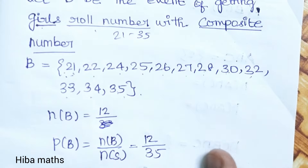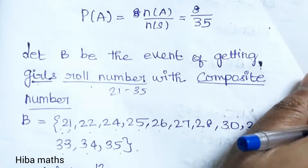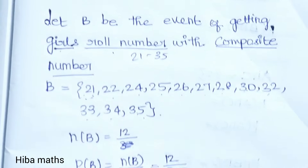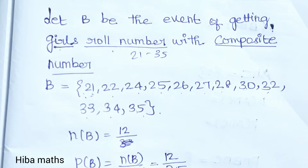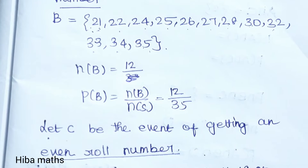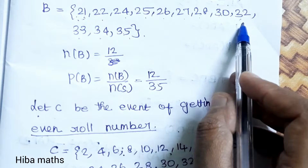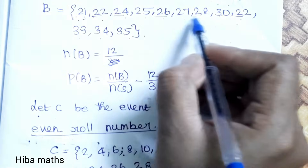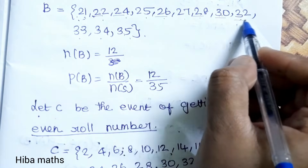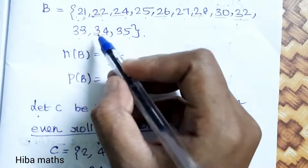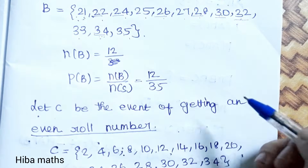Now let's find the intersections. A is prime numbers (boys 1–20), B is composite numbers (girls 21–35). Since A and B have no common elements, A∩B = 0. For B∩C: composite numbers from girls (21–35) that are also even: 22, 24, 26, 28, 30, 32, 34. That gives 7 elements. So P(B∩C) = 7/35.